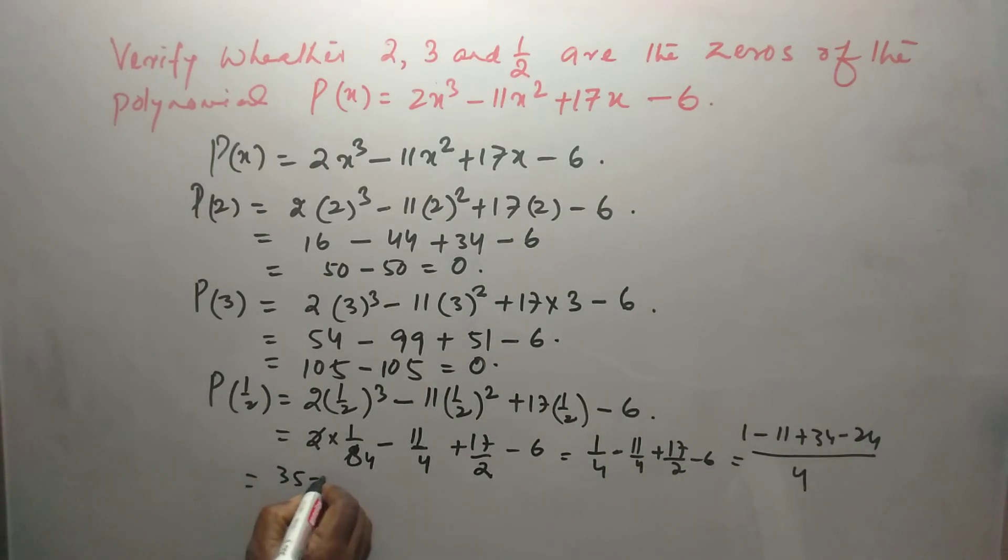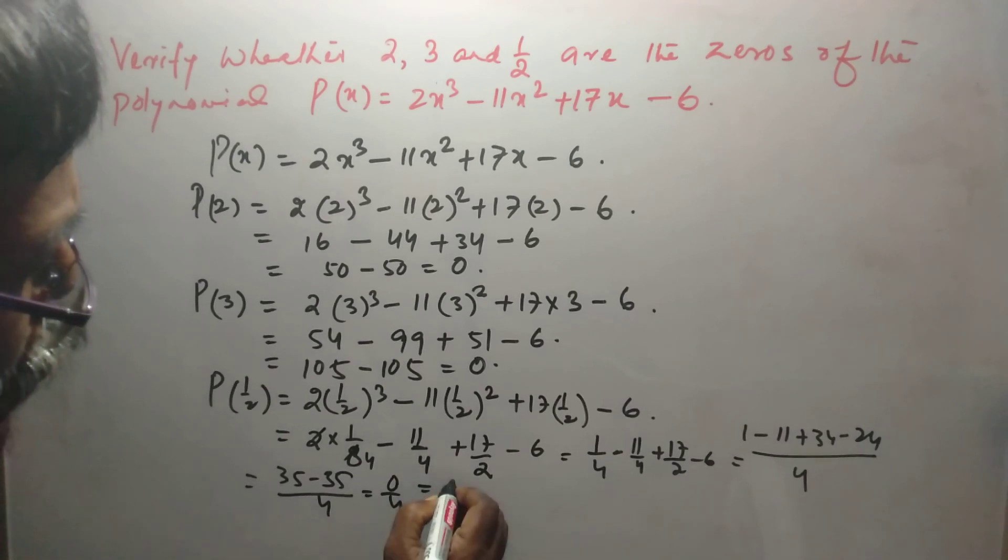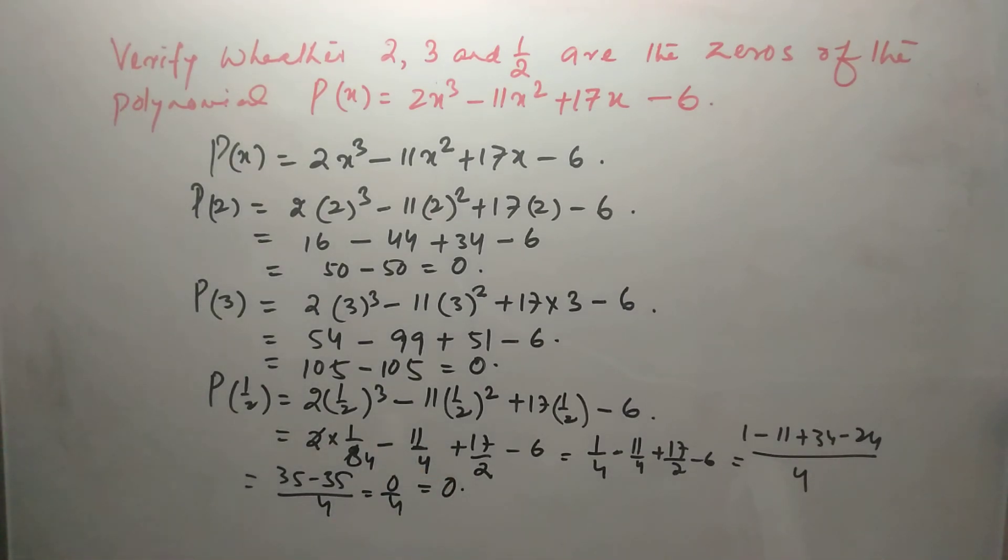So this is 35 - 35 divided by 4. So this is 0/4 = 0, hence proved.